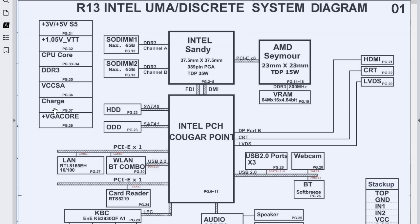Here we also have the main charge voltage, which is usually 19V. And we have the VGA core, which feeds the graphics card — but because the graphics card is integrated into the chipset here, this voltage will feed that chipset.